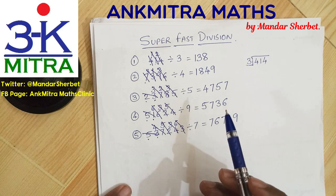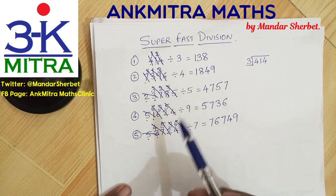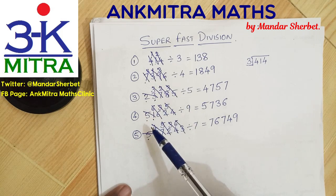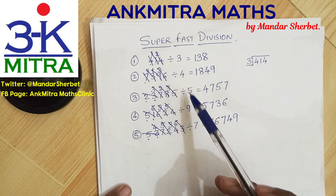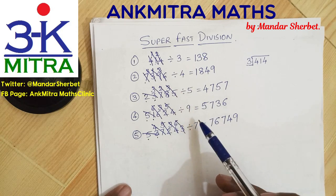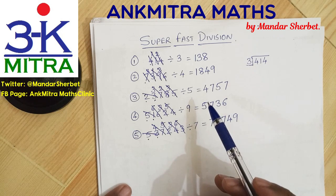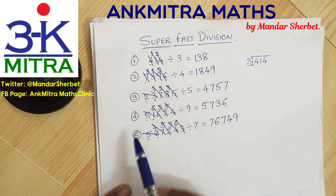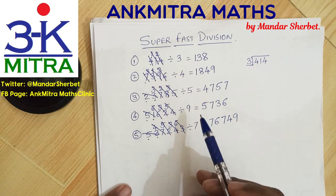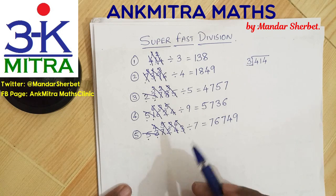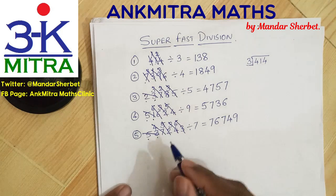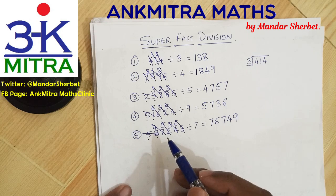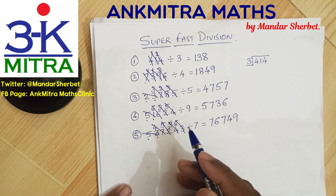I would request all parents and teachers to try explaining this method to kids in class 5, 6, or even class 7, so they can save time while dividing 3-digit, 4-digit, 5-digit, or 6-digit numbers by one-digit divisors, or even two-digit divisors for tables they already know. I hope this method is found useful by many kids and teachers. If you have any feedback, please mention it in the comments — I would love to read them. Thank you.